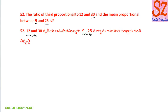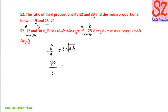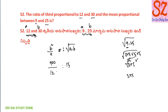That is equal to under root of a times b. So substituting values: a is 30 and b is 12. So 30 squared on top gives 900 by 12. Under root of 9 and 25: 9 is 3 into 3, and 25 is 5 into 5. So we have 3 squared and 5 squared. Square root cancels, giving 3 and 5. That is equal to 15 directly.